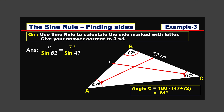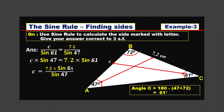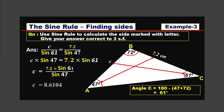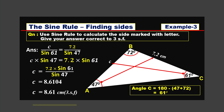Cross multiplying: c times sine 47 equals 7.2 times sine 61. To find c, divide both sides by sine 47. Therefore, c equals 7.2 times sine 61 divided by sine 47. The answer is 8.6104. Rounded to three significant figures, the final answer is c equals 8.61 centimeters.